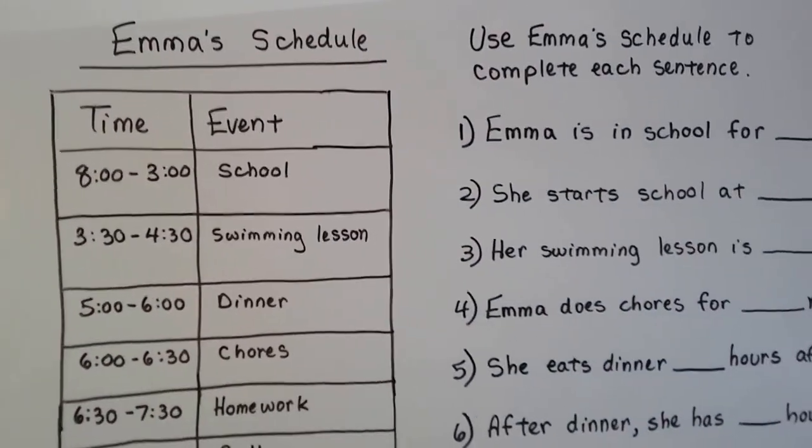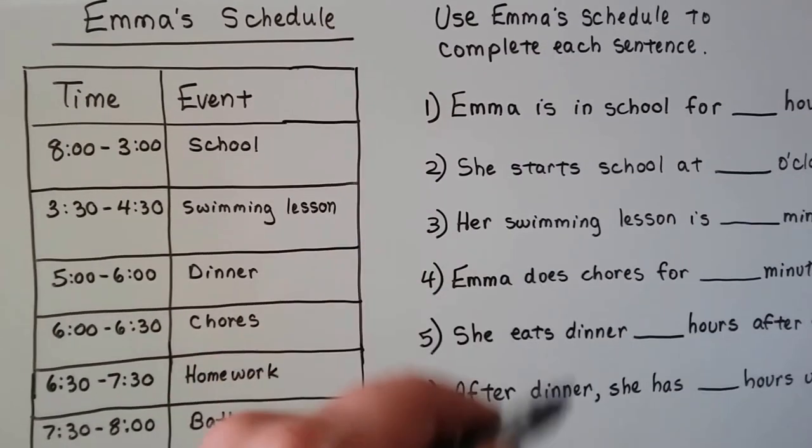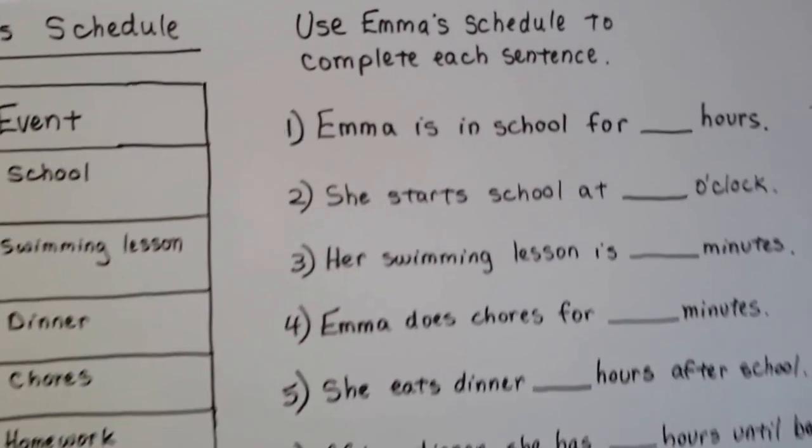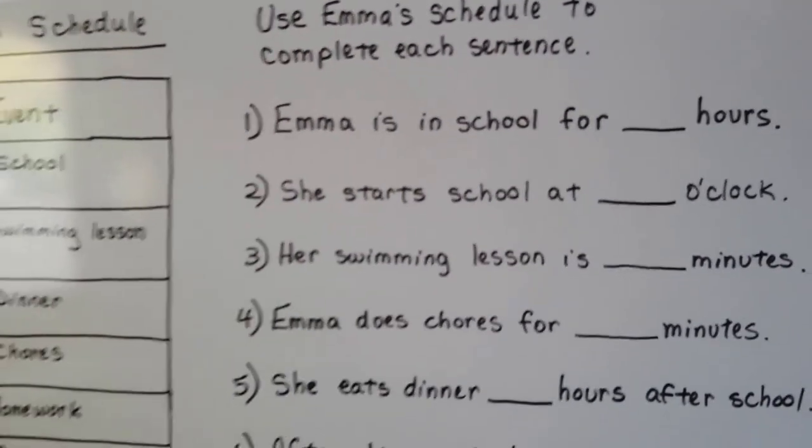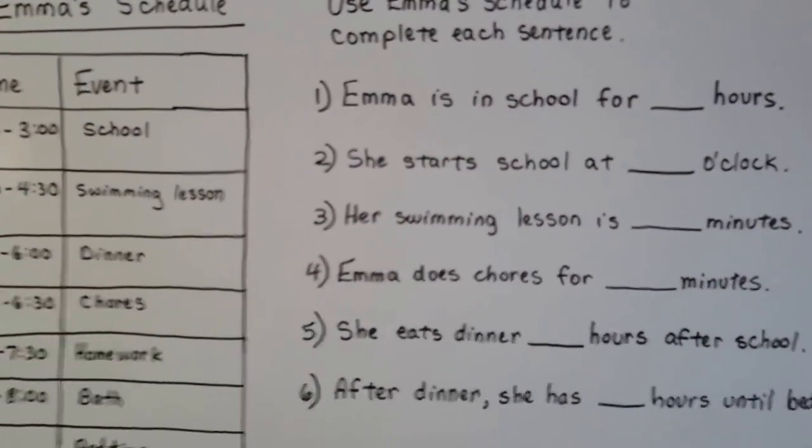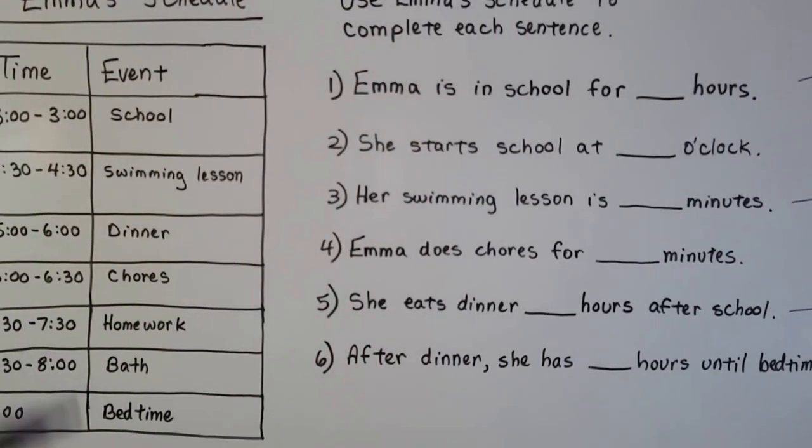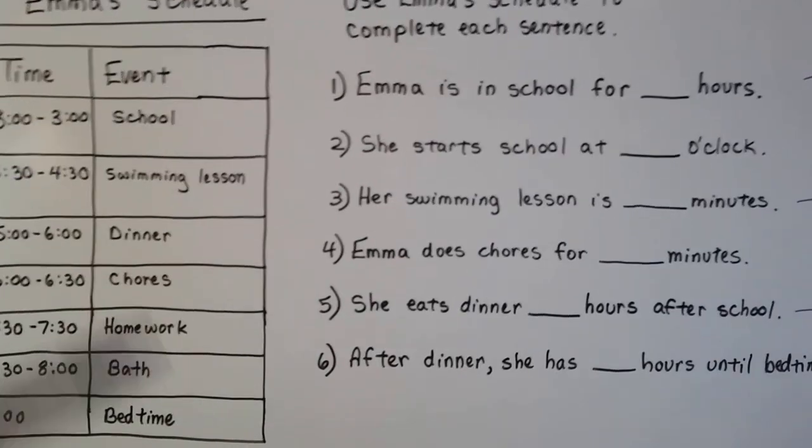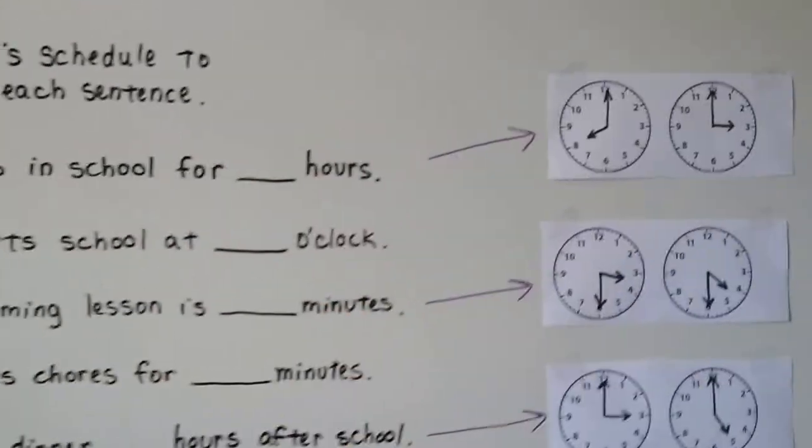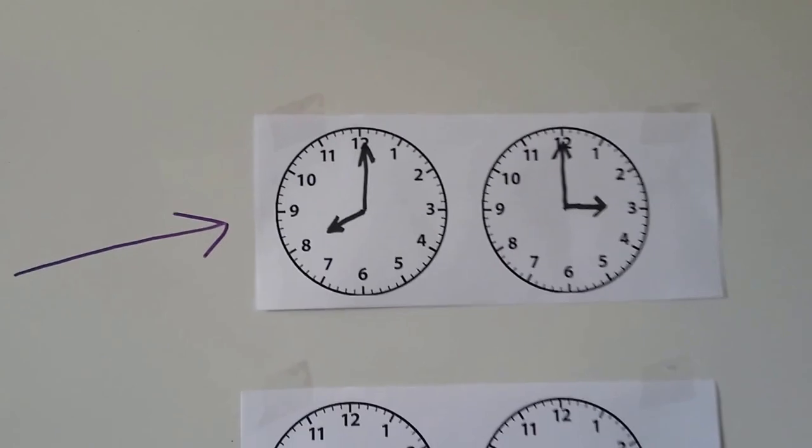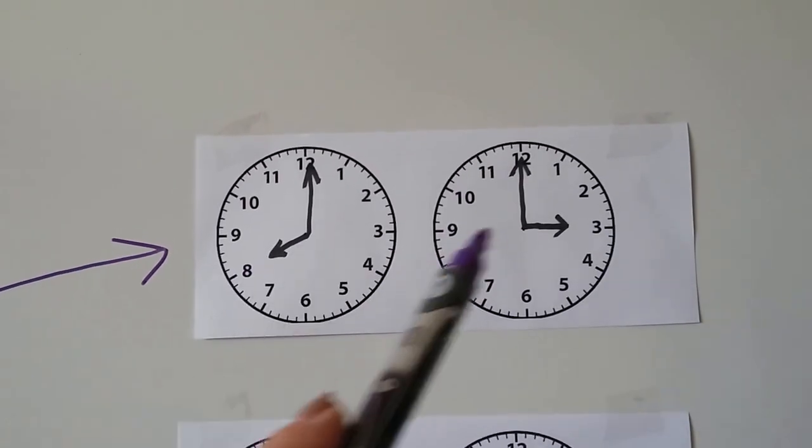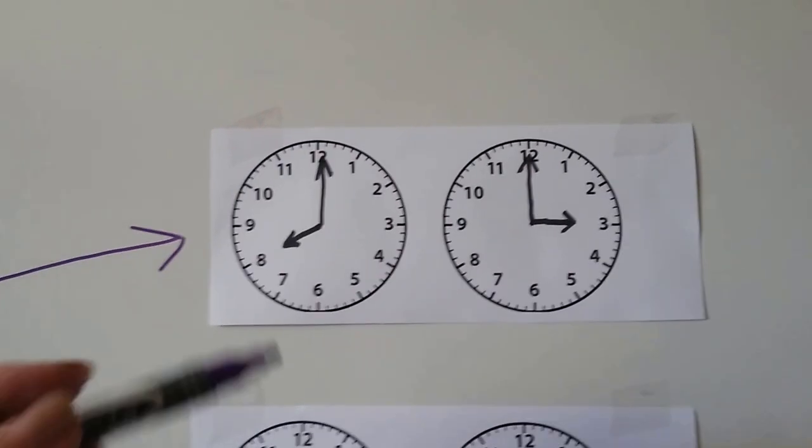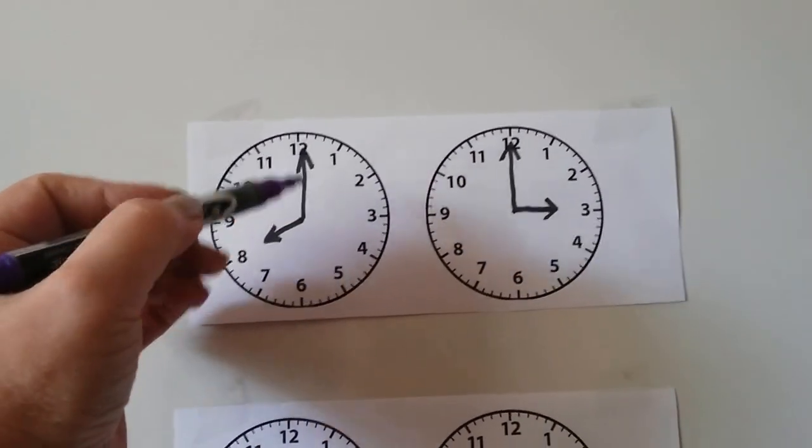So we're going to use Emma's schedule to complete each one of these sentences. We're going to have little clocks that will help us. So let's look at the first one. It says, Emma is in school for blank hours. Well, we can see on the schedule she starts school at 8 and gets out at 3. So we're going to use these little clocks up here. She starts school at 8 and she gets out at 3. So we're going to have to count the hours, and it's going to be easier for us because they're o'clocks.